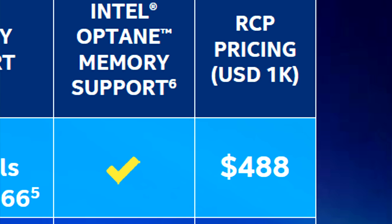I couldn't find the actual term RCP anywhere online. I tried Googling around for it, but if you know exactly what it means, let me know down in the comments below. I assume it probably means something like recommended consumer pricing, or maybe the C doesn't stand for consumer — but it's probably some type of recommended pricing. At the end of the day, that $488 price is only valid if you actually go out and buy 1,000 units.